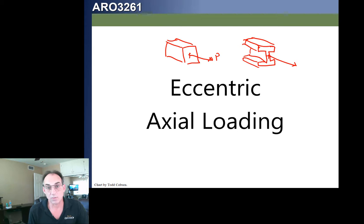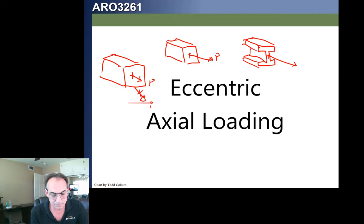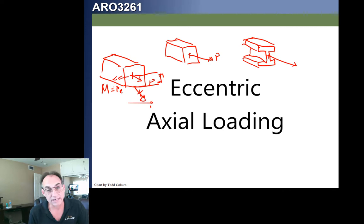Now, if that load were applied somewhere else — for example, if we have the same rectangular section and the load is applied off-center — that's going to induce a moment. We replace it with an equivalent force system: a force P at the centroid, plus a moment equal to P times E, where E is the eccentricity of that loading. So now we have a new loading with axial load and bending — that's called an eccentric load.